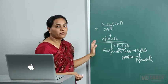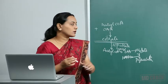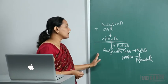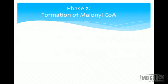In summary: acetyl-CoA is transported out as citrate; oxaloacetate is converted to pyruvate via malate and transported into the mitochondria. One NADPH is generated for each acetyl-CoA transferred from the mitochondria to the cytosol. So both acetyl-CoA and NADPH come out into the cytosol — that is the importance of this citrate transport mechanism.